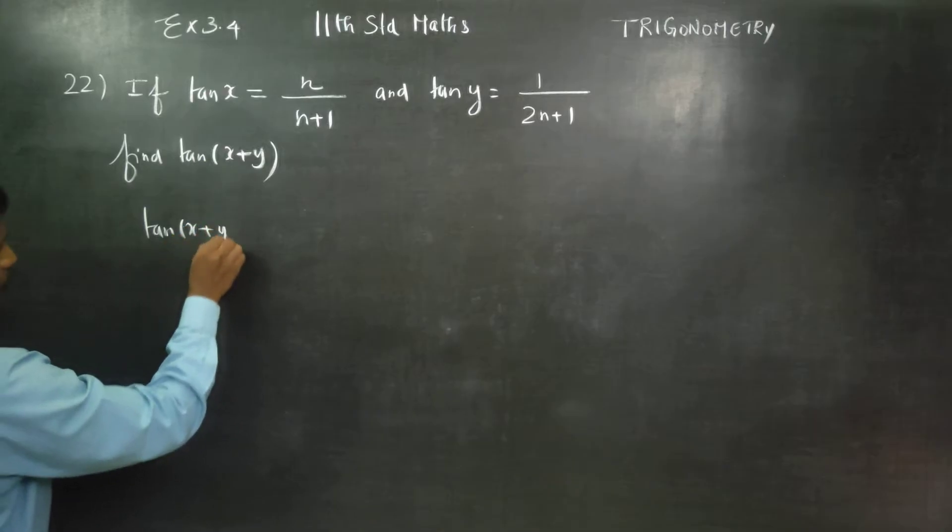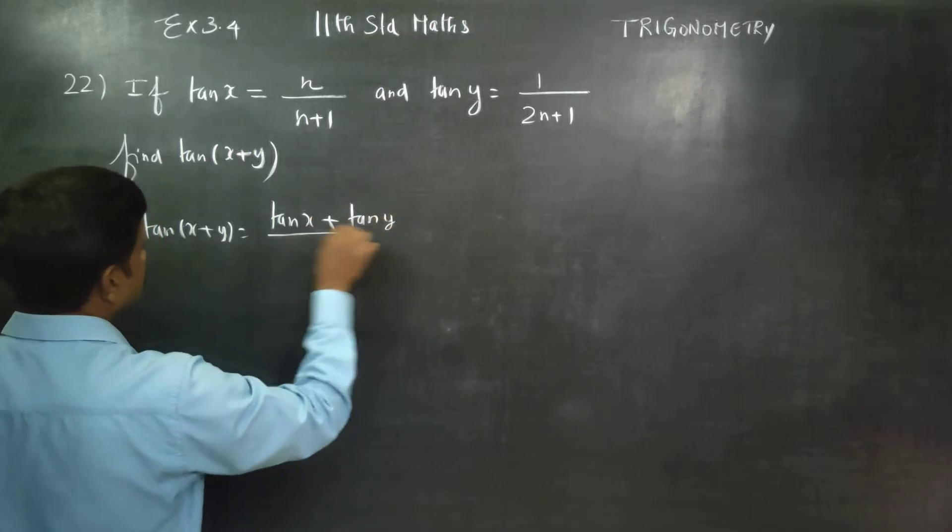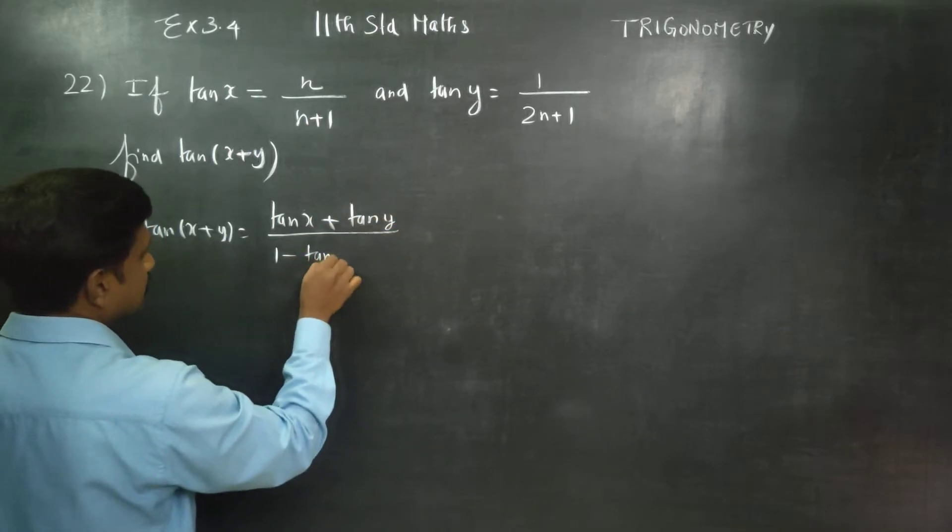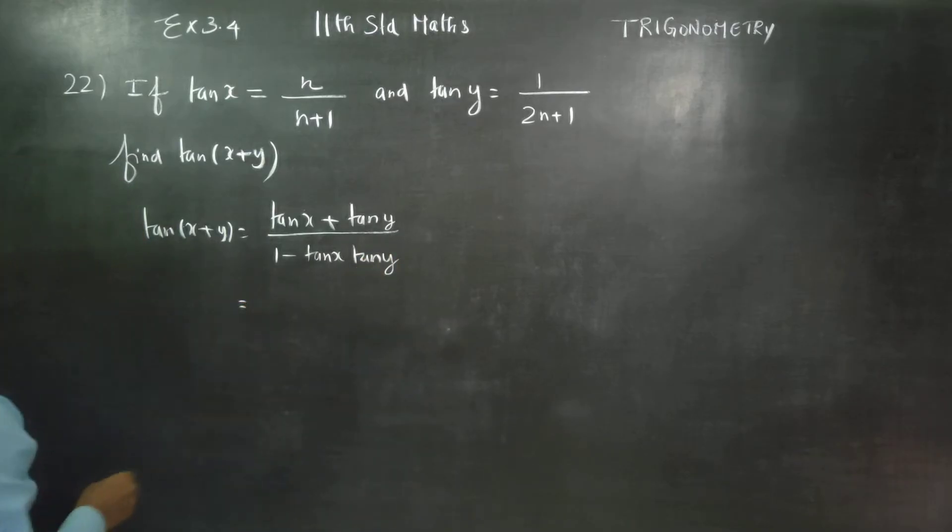Tan(a+b) formula is tan a plus tan b divided by 1 minus tan a tan b. This is the formula for tan(a+b).